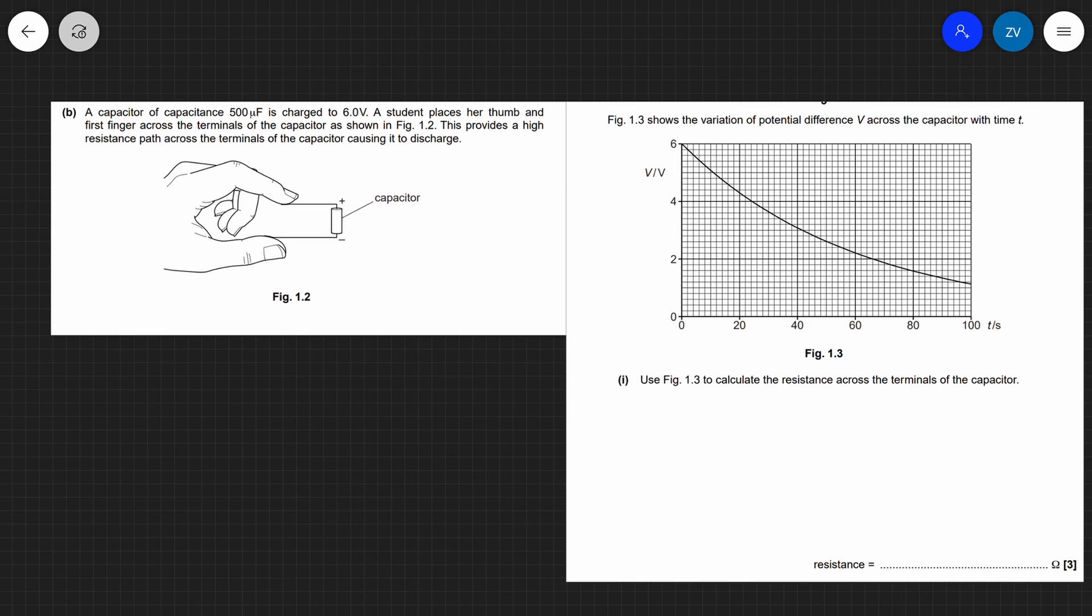Well first of all, if we have a V against T graph, we can actually work out the time constant of this capacitor. Remember that at time equal to the time constant, the voltage falls to 37% of its initial value. Now our initial voltage is 6 volts as we can see right here. So what I'm going to do is calculate 37% of 6 volts and this is 0.37 multiplied by 6. That's going to give us 2.2 volts.